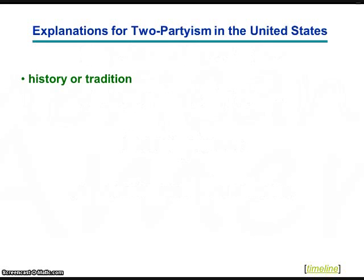A second explanation for a dominant two-party system in the United States, offered by some analysts, is the idea that there is a sort of natural dualism to American politics. That is to say that most of the major issues that have presented in the American system have come down to two basic positions. According to this argument, given that most issues come down to an either-or proposition, there are two political parties to articulate the two positions.